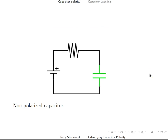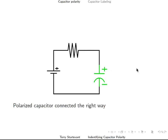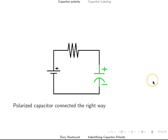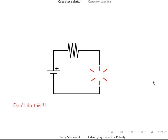If we put a non-polarized capacitor in a circuit, it doesn't matter which way we connect it, and the symbol doesn't show any polarization. A polarized capacitor has a curved bar on the bottom that indicates which way it's supposed to go in a circuit — the curved contact goes to the lower voltage. If we put a polarized capacitor in the wrong way, it can explode. Don't do this.